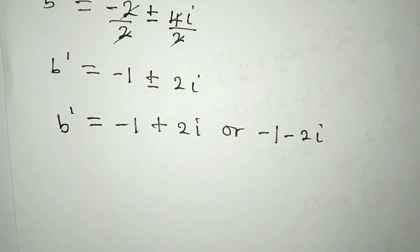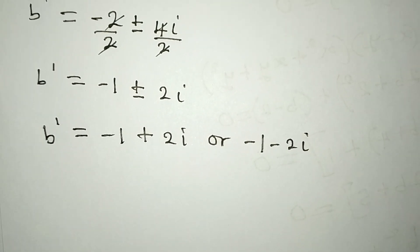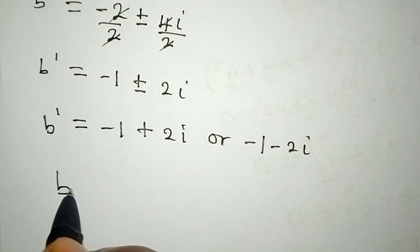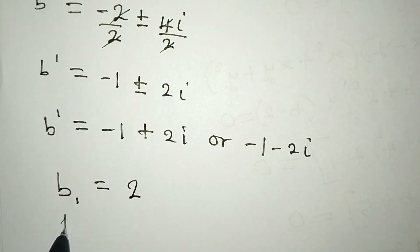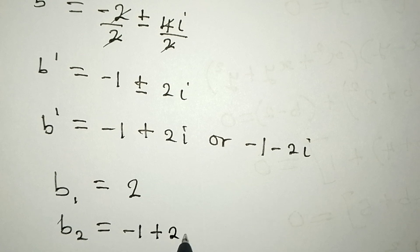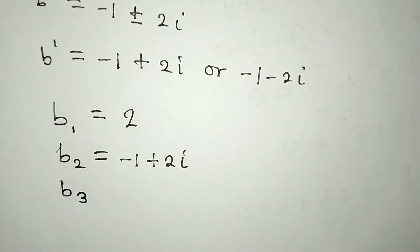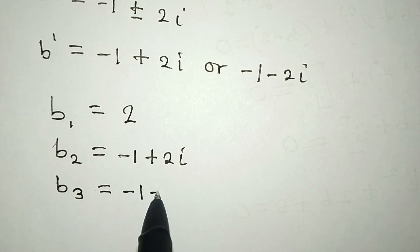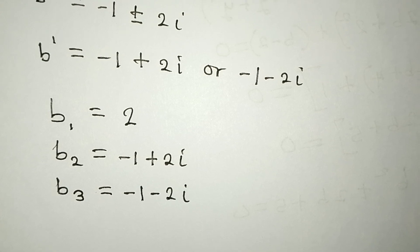Bringing the three solutions together — remembering that b prime is still the b in the equation — we have: b1 equals 2, b2 equals negative 1 plus 2i, and b3 equals negative 1 minus 2i. Only the first solution is real.